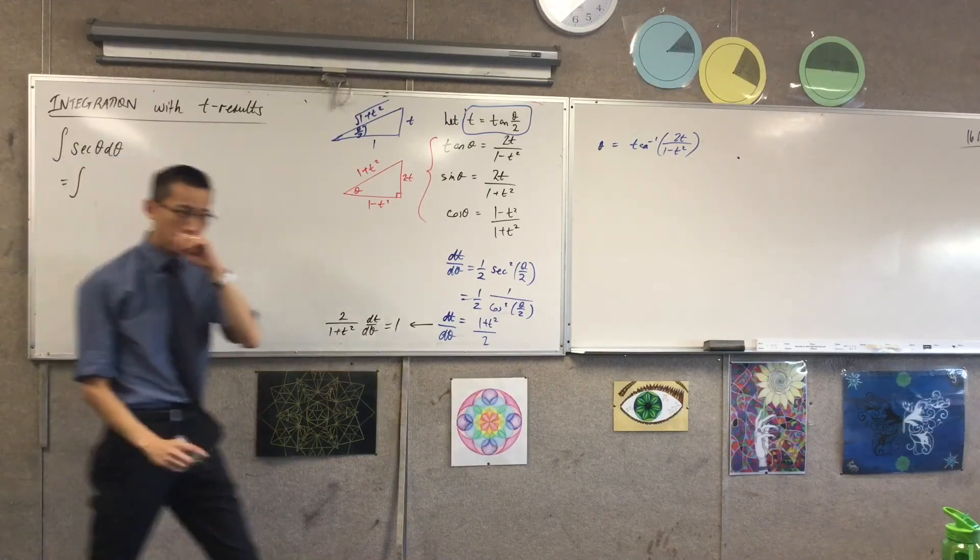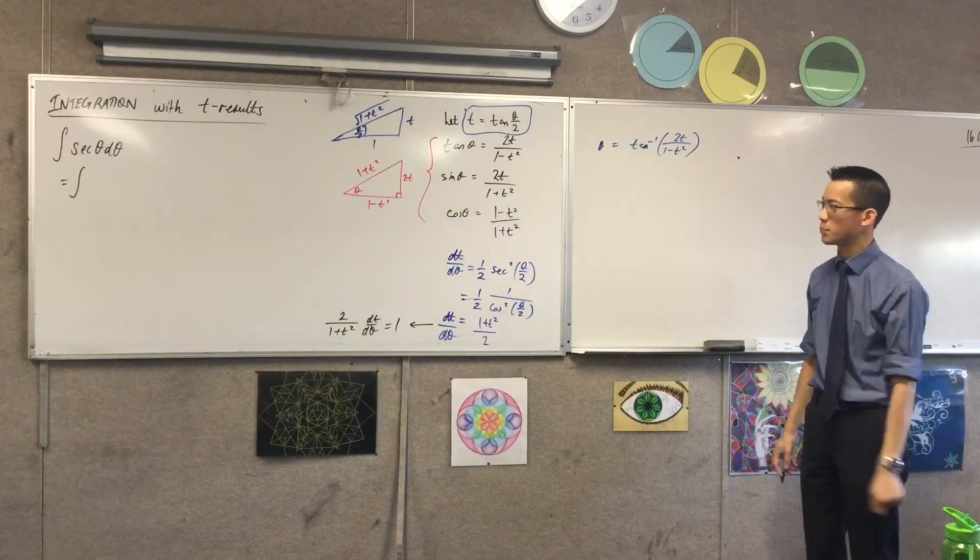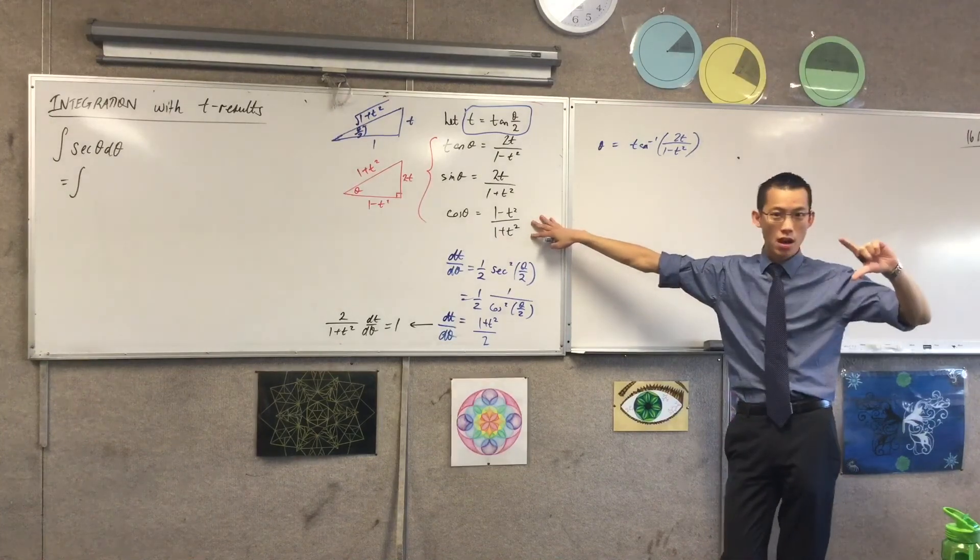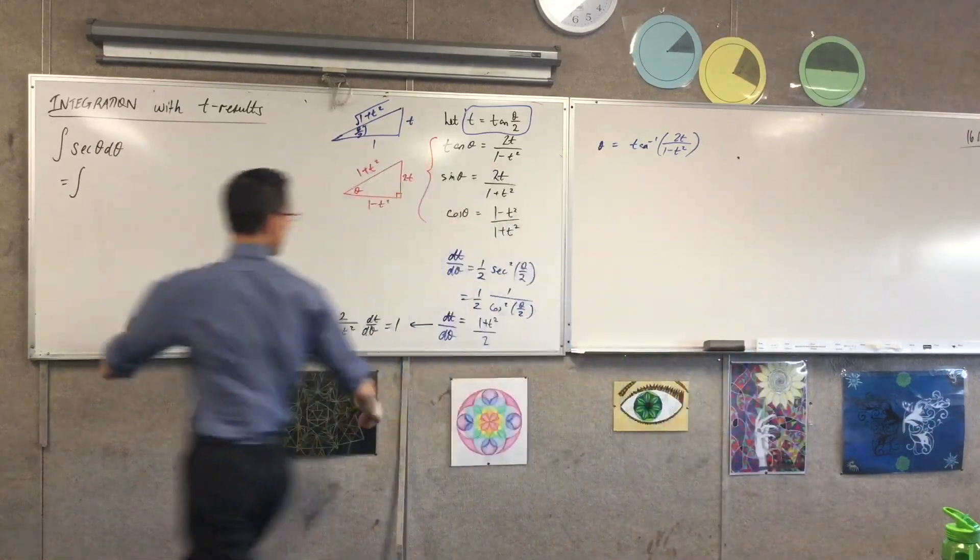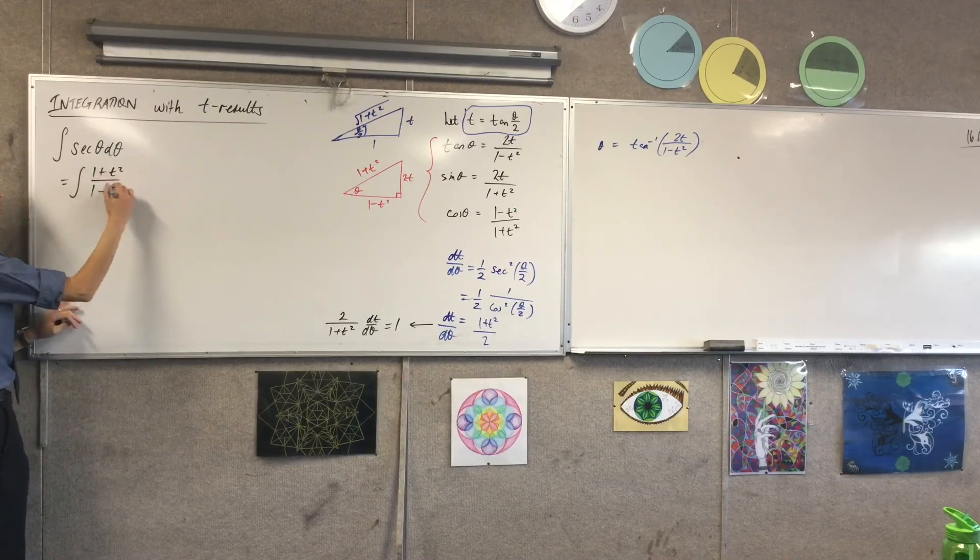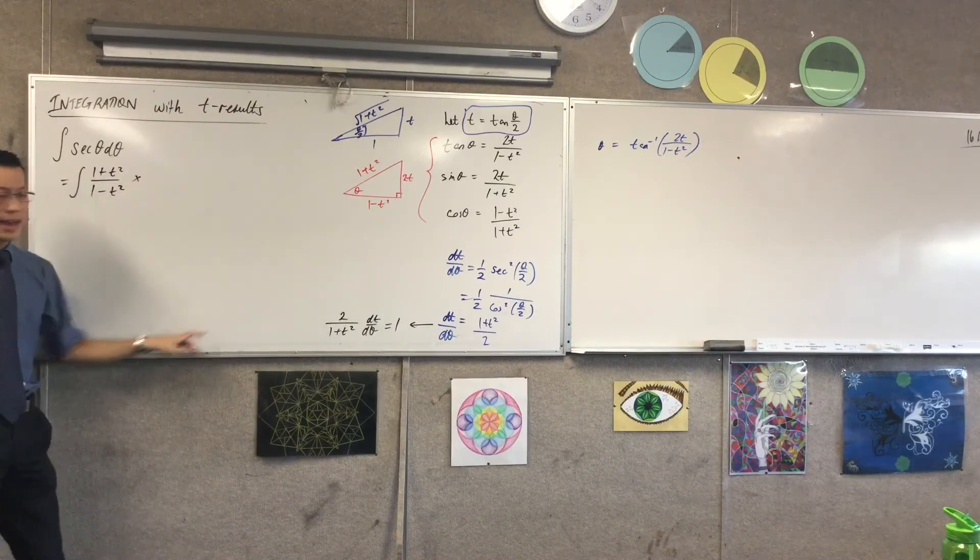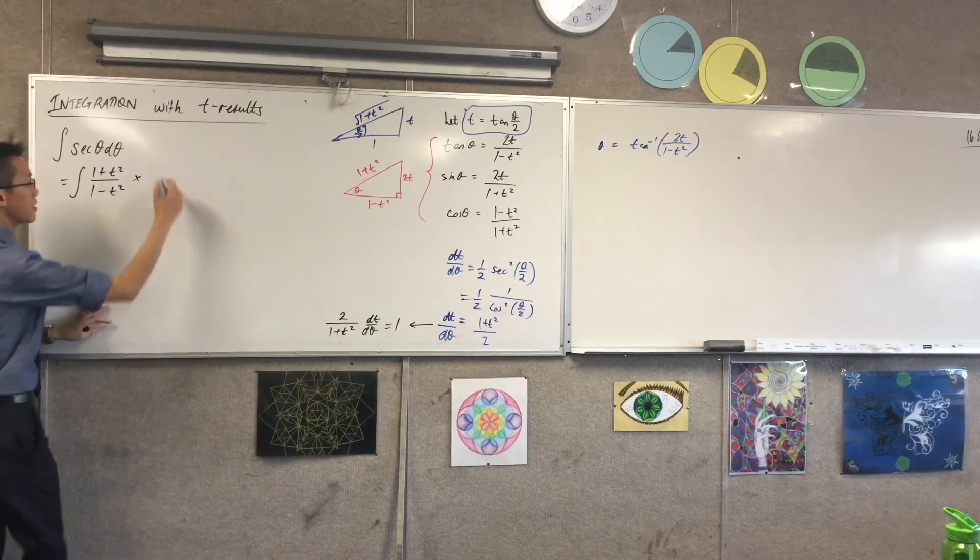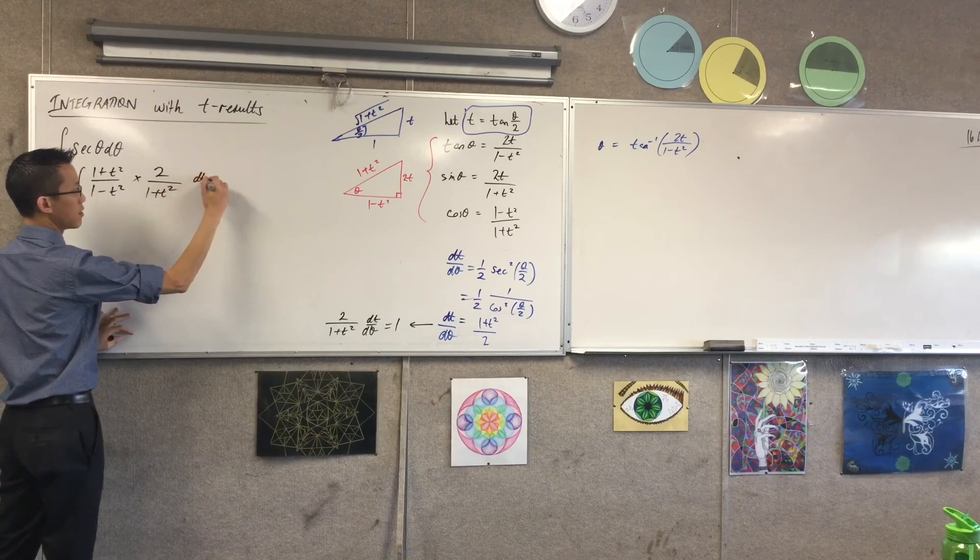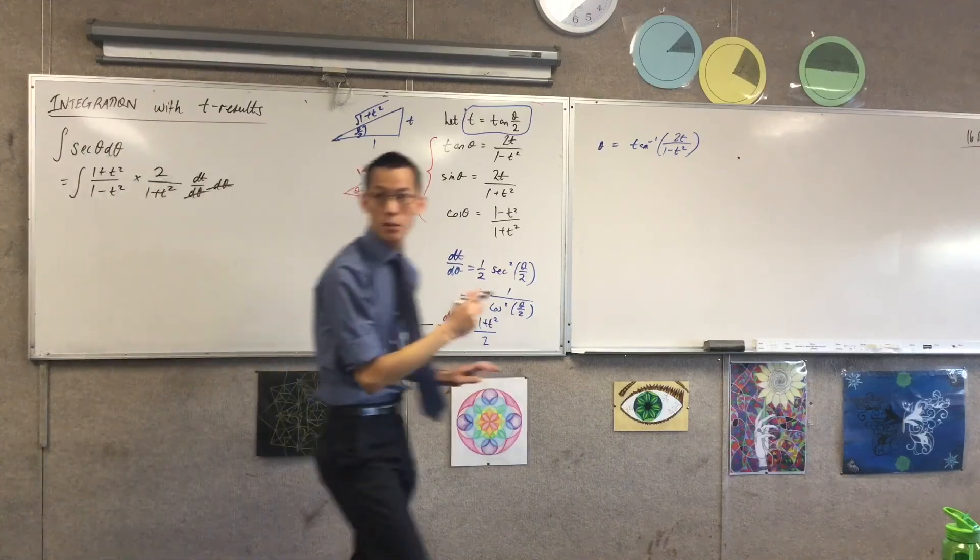This is equal to, what does the integrand become before I change the variable of integration? This is cos, so I actually want the reciprocal of this. So this is going to be (1 - t²)/(1 + t²). Are you happy with that? Multiplied by this guy. Cancel, cancel. Looking good so far.